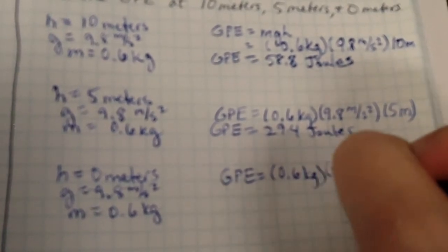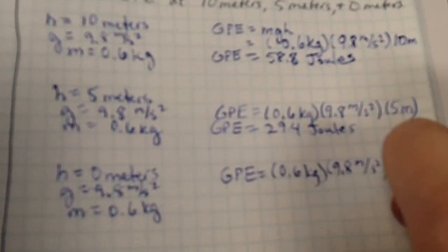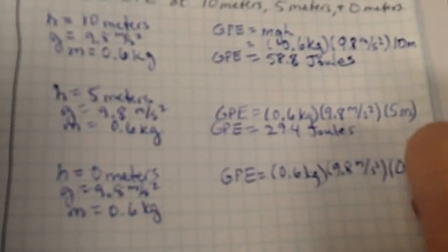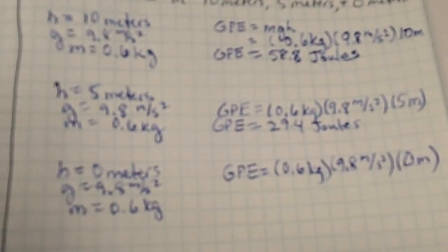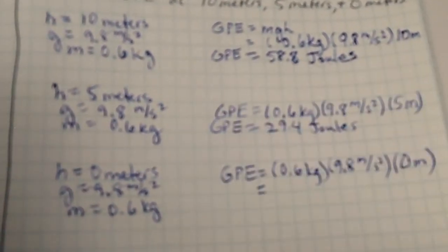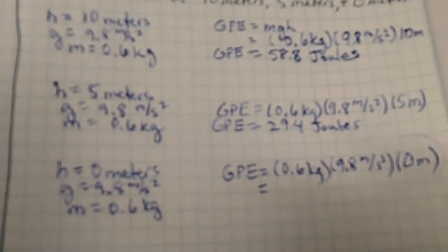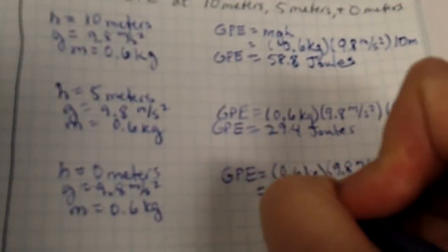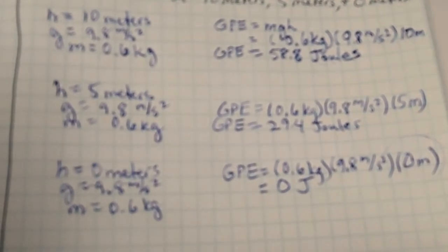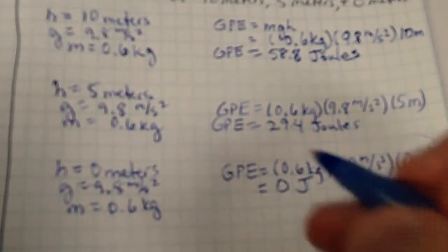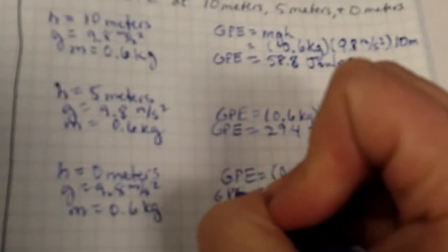And then our GPE calculating that out is our 0.6 kilograms times 9.8 meters per second squared. And then we've got a doozy. We've got zero meters. So I don't think any of us need a calculator for that. We're looking at the zero meters. Multiplying anything by zero, we end up with zero. Except this is going to be zero joules. And that is the answer for our GPE.